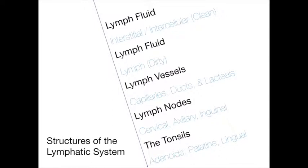Intercellular fluid, also known as interstitial fluid or tissue fluid, is plasma that flows out of the capillaries of the circulatory system and into the spaces between the cells. This fluid carries food, oxygen, and hormones to the cells. Lymph fluid, usually referred to simply as lymph, is intercellular fluid as it returns to the venous circulatory system. Lymph removes waste products from the cells and must be filtered by the lymph nodes before it re-enters the circulatory system.